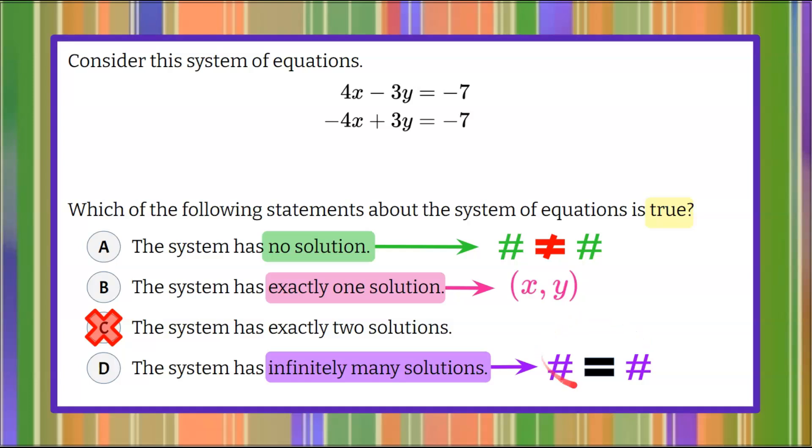So it would be a true numerical statement. When graphed, infinitely many solutions would be coinciding lines. So you would graph a line, and then the second line or equation in the system would be the same exact line. So coinciding, one right on top of the other.